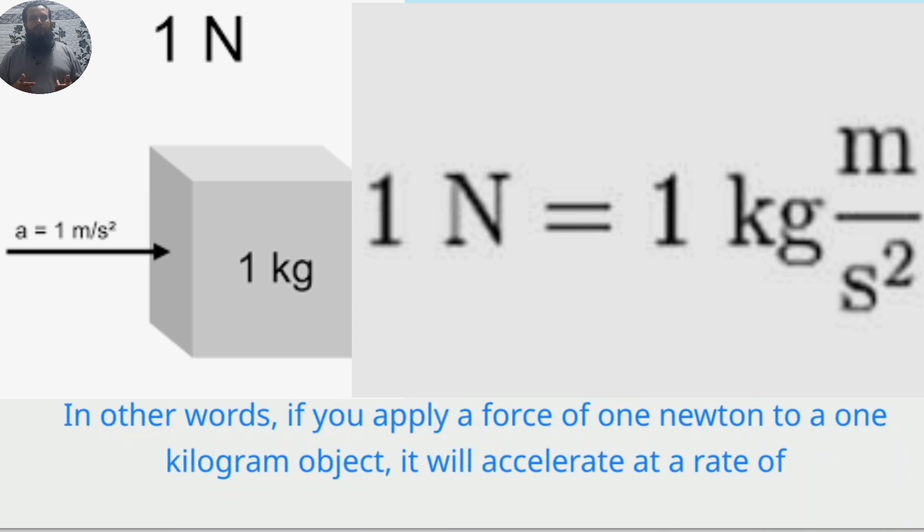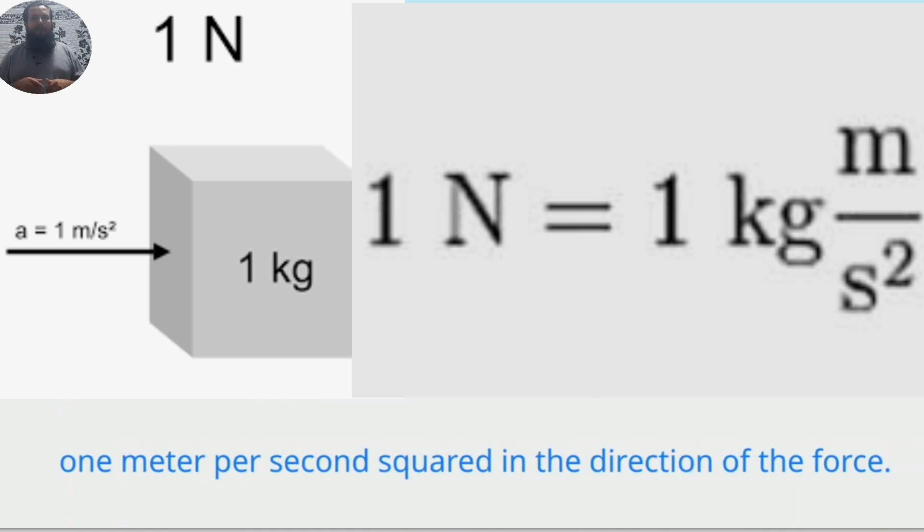In other words, if you apply a force of 1 newton to a 1 kilogram object, it will accelerate at a rate of 1 meter per second squared in the direction of the force.